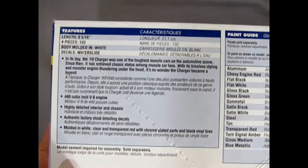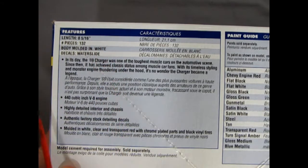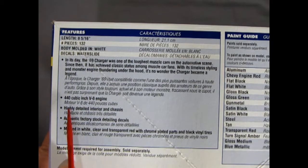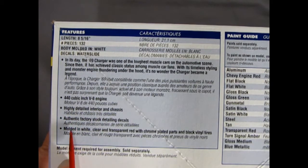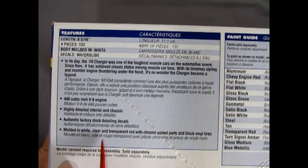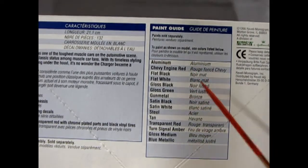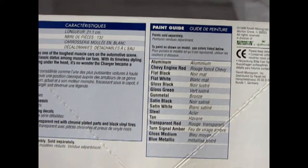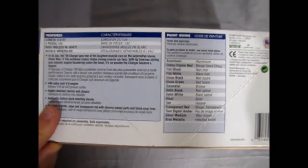So let's just take a look at the box here for a minute. And here we can see all the exciting features of this kit. It is 8 and 5/16 inches long, 132 pieces, molded in white, water slide decals, comes with a 440 cubic inch V8 engine, highly detailed interior and chassis, authentic factory stock detailing decals, and molded in white, clear transparent red with chrome plated parts and black vinyl tires. And in this panel over here we have all the paint callouts that we need. Chevy engine red in a Chrysler? What's going on here?